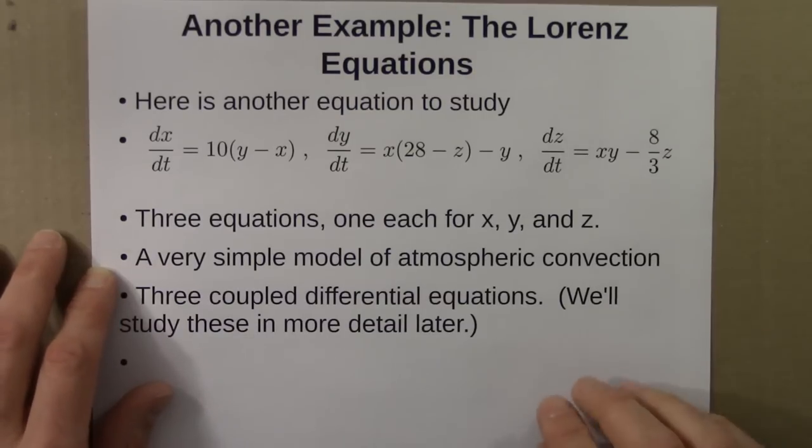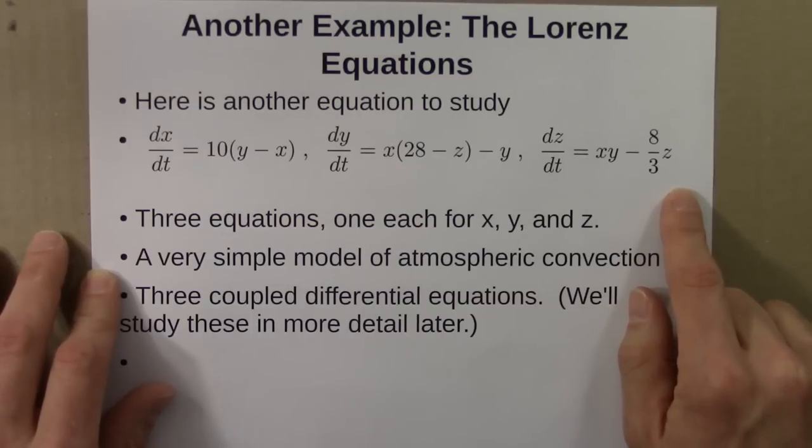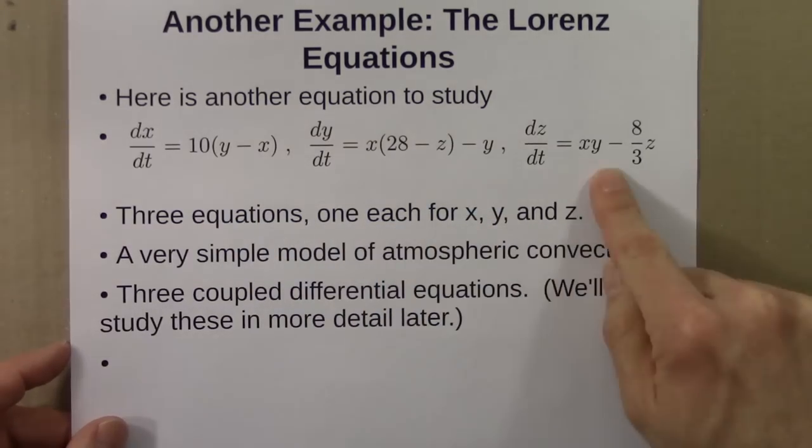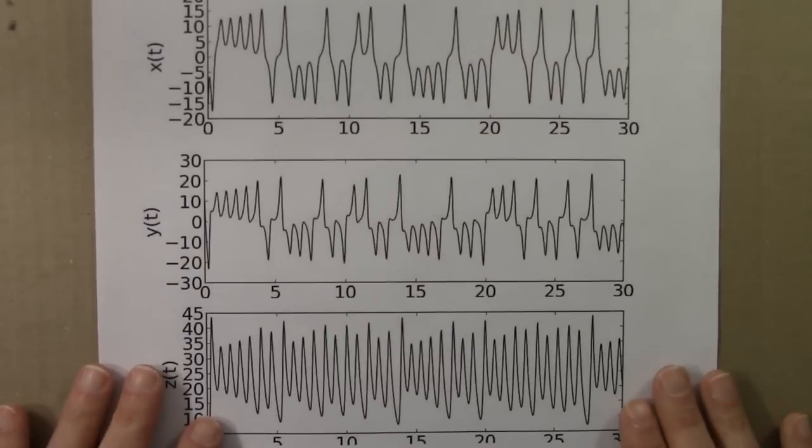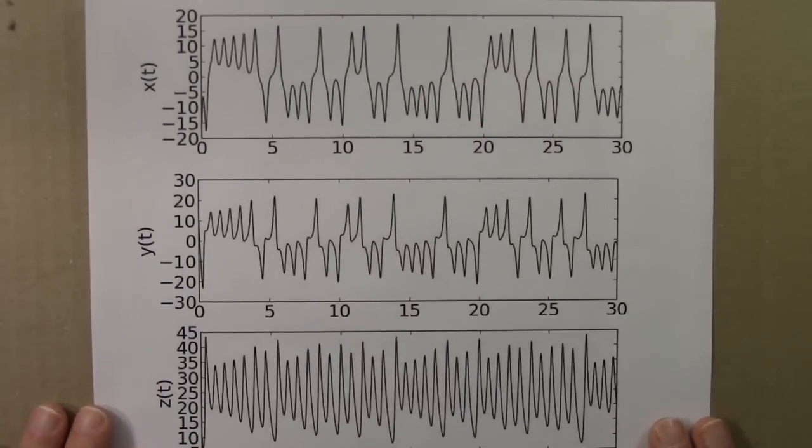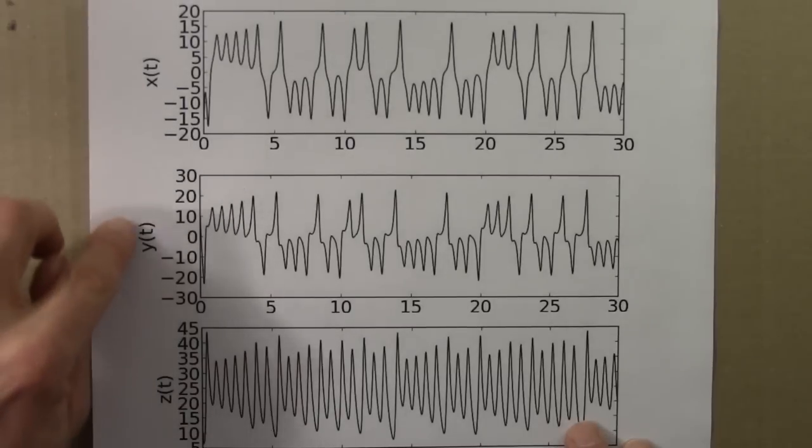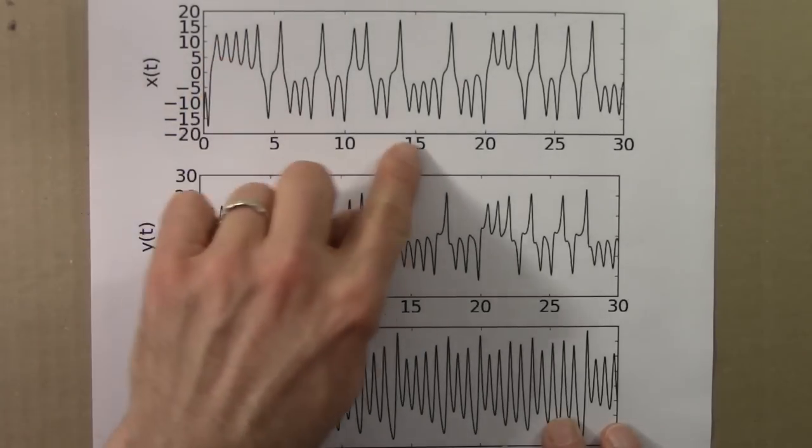Just like before, we can solve these equations. We'll have to use a computer to do it, using Euler's method or something a little bit fancier. When I do that for this equation, I get the following three functions. This is an equation for three functions, x, y, and z, and they're each a smooth, continuous function of time. This is time on this axis, and then x, y, and z.